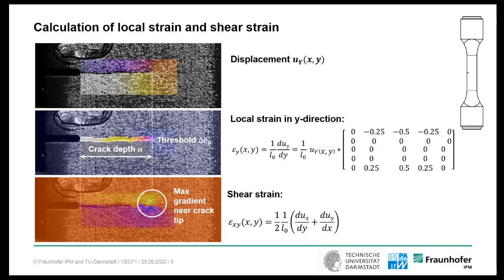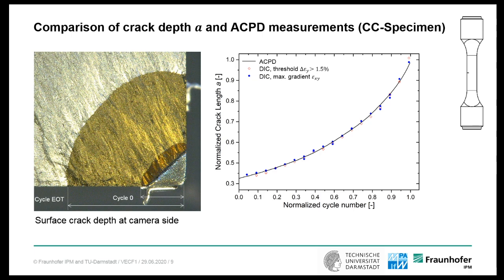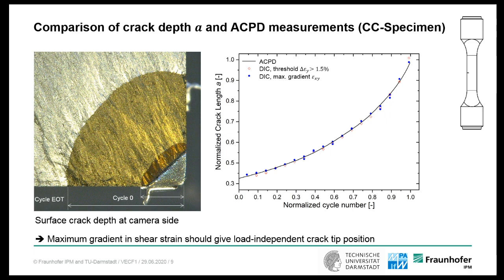If you want to calculate crack depth, you can do that in two different ways. You can define the crack tip position by a threshold in the strain field, which is of course load dependent. Or you can use the maximum gradient in shear strain. We compared the resulting crack depth to ACPD measurements. The ACPD was calibrated by the surface crack depth at cycle zero and at end of test. The red diamonds are the DIC values measured by thresholding and the blue dots are those measured by maximum gradient. Both agree well with ACPD, but we prefer the maximum gradient values to measure crack tip position because they are load independent.